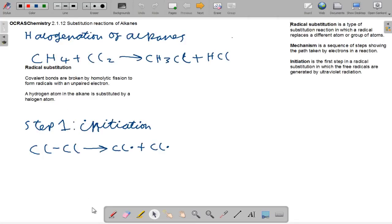Hello, welcome to my tutorial on substitution reactions of alkenes. We're going to talk about radical substitution, when covalent bonds are broken by homolytic fission to form radicals with an unpaired electron, and a hydrogen atom in the alkane is substituted by a halogen atom. I'm going to use this example today: CH4 plus Cl2 equals CH3Cl plus HCl.